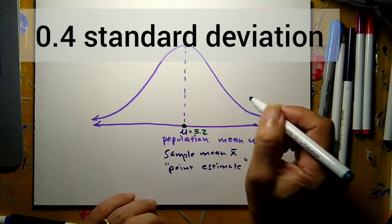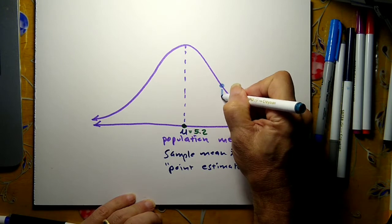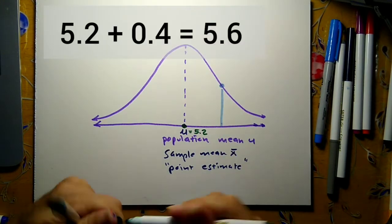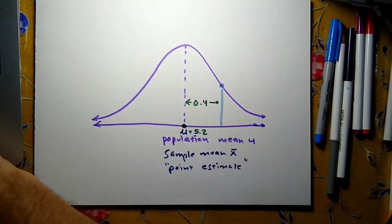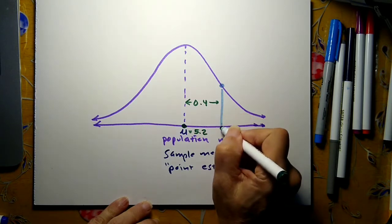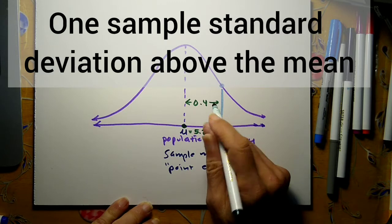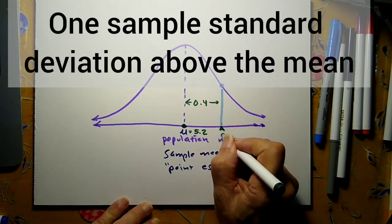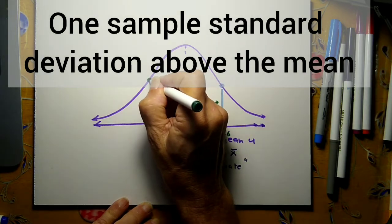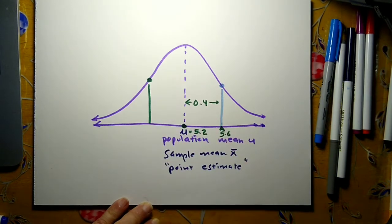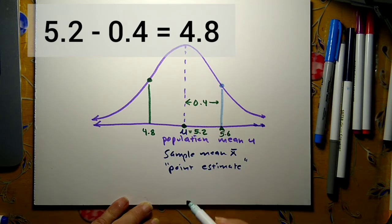It turns out that on the normal curve, this place here will be 0.4 above the mean. This will be one sample standard deviation above the mean. So this will be 5.2 plus 0.4, at 5.6 grams. And this point right here, that will be one standard deviation below the mean, 5.2 minus 0.4, 4.8 grams.